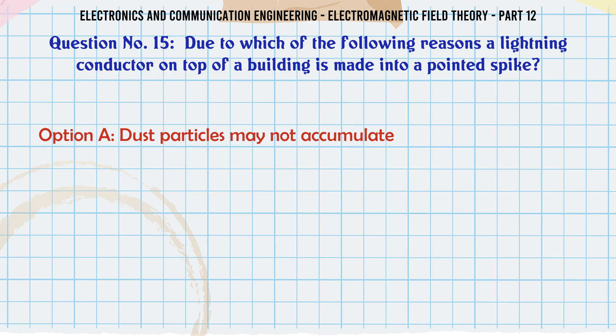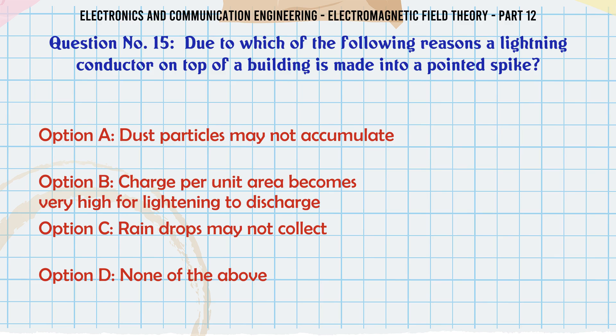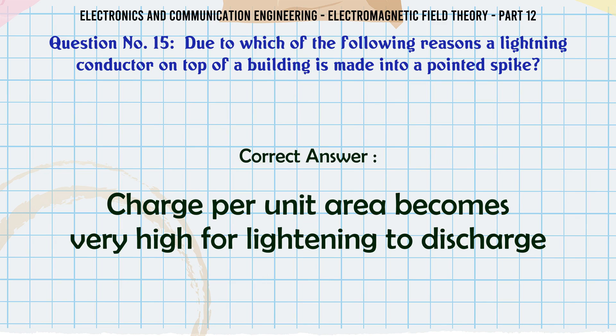Due to which of the following reasons is a lightning conductor on top of a building made into a pointed spike? A. Dust particles may not accumulate, B. Charge per unit area becomes very high for lightning to discharge, C. Rain drops may not collect, D. None of the above. The correct answer is: Charge per unit area becomes very high for lightning to discharge.